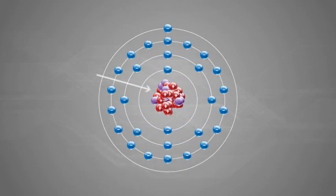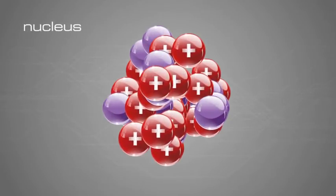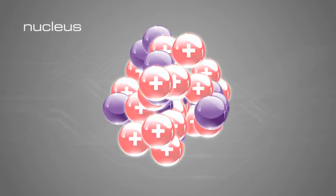In the center of an atom is a nucleus, which represents almost all of the atom's mass. The nucleus is made up of even smaller subatomic particles called protons and neutrons.